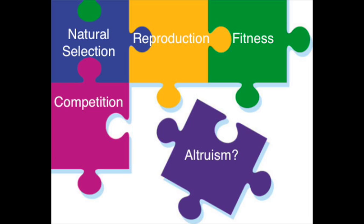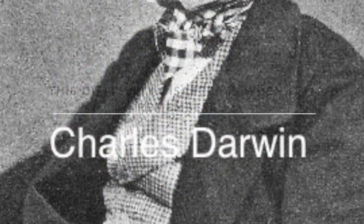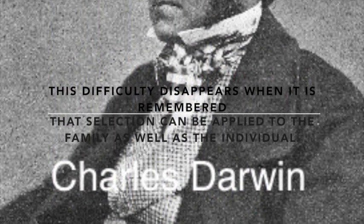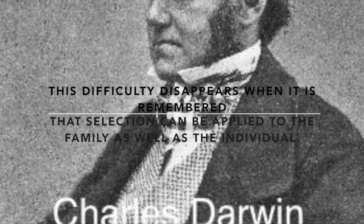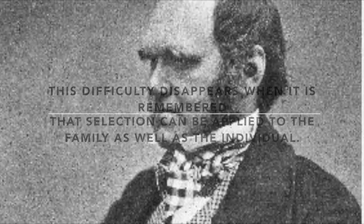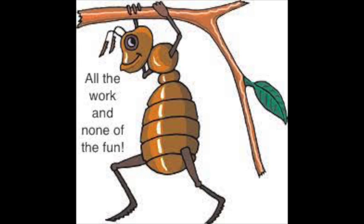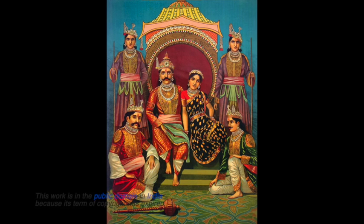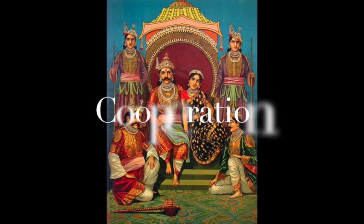Can altruistic behavior be explained by natural selection? He puzzled over this for a long time, but he realized that all of these ants are related to one another. And he reasoned: "This difficulty disappears when it is remembered that selection may be applied to the family as well as to the individual." The worker ants do the work and the queen, with a select few males, do all the reproducing. But through their cooperation, all their genes are still being passed on because they are all genetically related.